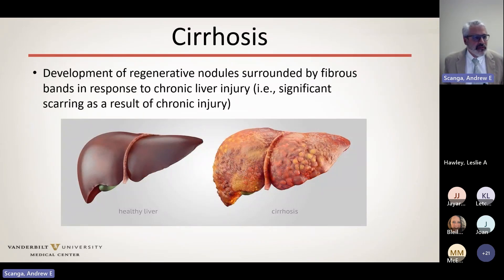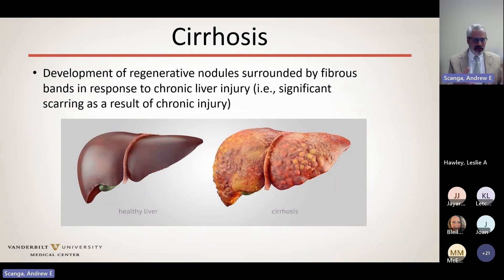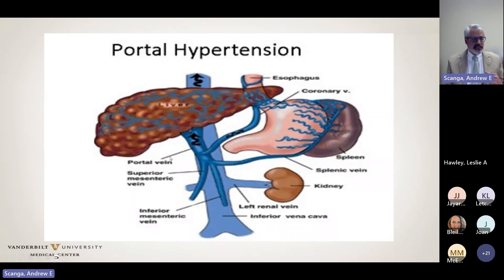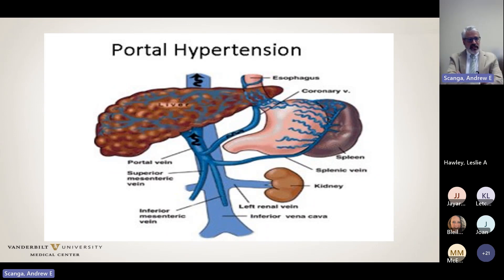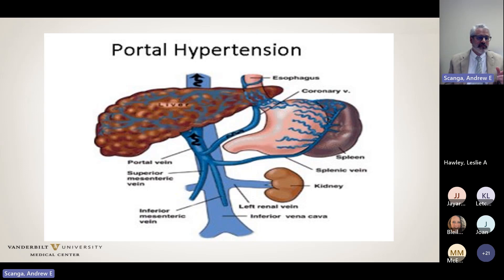Cirrhosis is the development of regenerative nodules surrounded by fibrous bands in response to chronic liver injury. Anything that causes chronic inflammation of the liver can cause cirrhosis — not just alcohol or fatty liver disease or hepatitis C. As injury progresses, fibrosis advances, eventually leading to cirrhosis. The liver can appear normal early on with cirrhosis on CT or ultrasound, but eventually gets that lumpy bumpy appearance with left lobe and caudate lobe enlargement. As things progress, blood flow through the liver becomes impeded and portal pressures increase — all blood from the intestines and spleen flows through the liver first.